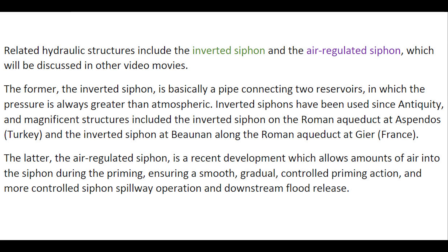Related hydraulic structures include the inverted siphon and the air-regulated siphon, both of which will be discussed in other video movies. The inverted siphon is basically a pipe connecting two reservoirs in which the pressure is always greater than atmospheric. Inverted siphons have been used since antiquity, and magnificent structures include the Roman aqueduct at Aspendos and at Eger. The air-regulated siphon is a relatively recent development, which allows a mount of air into the siphon during the priming, ensuring a smooth and gradual priming action and controlled siphon spillway operation.